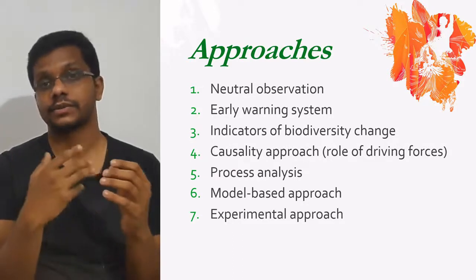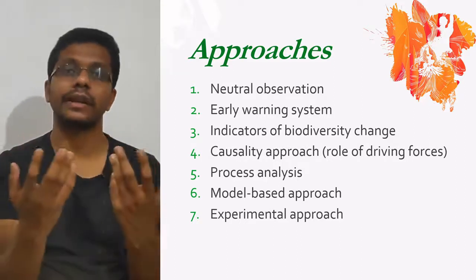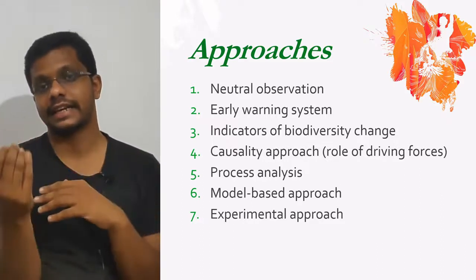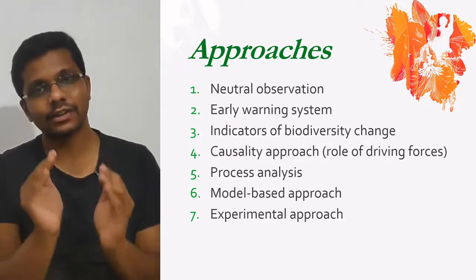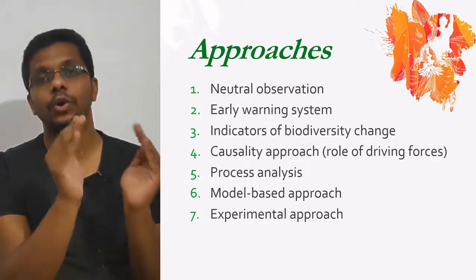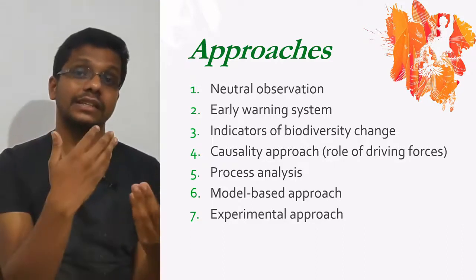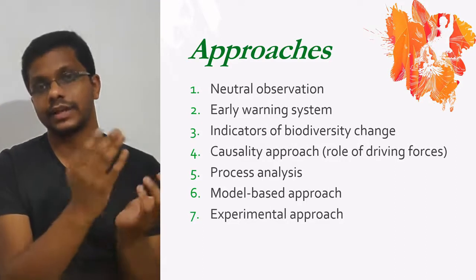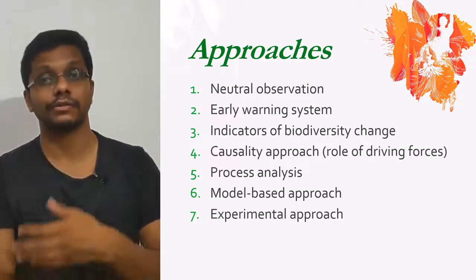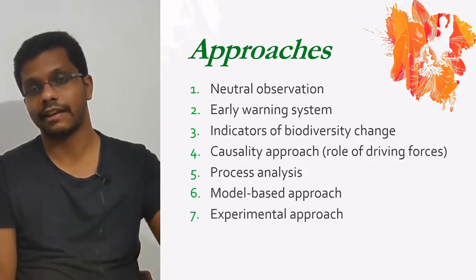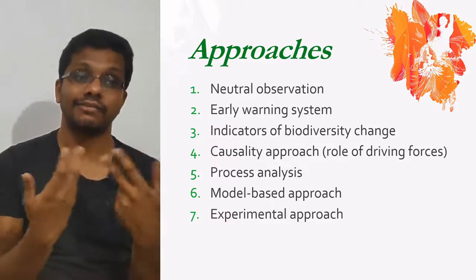Third, we have an approach in which we are using indicator organisms for studying biodiversity, which is one of the most commonly used methods. Instead of studying many different organisms or the whole diversity, we can concentrate on a few such organisms to get an idea about the whole biodiversity. The main problem with this approach is the selection of an indicator organism — it should be directly or positively correlated with biodiversity. Finding a good indicator organism is difficult because one that works perfectly in one area may not work in another. The indicator organism used in Kerala cannot be used in Tamil Nadu or maybe in Africa or America. So selection of an indicator organism is very difficult, but the method is excellent if we can find one.